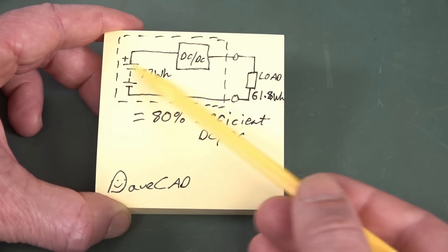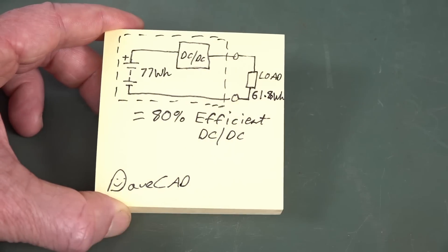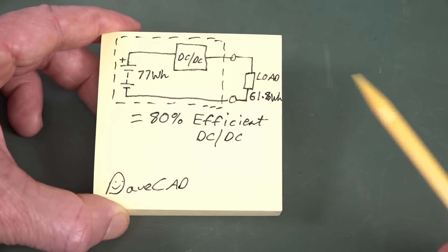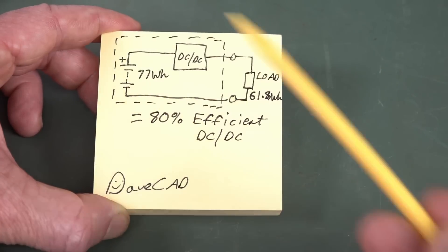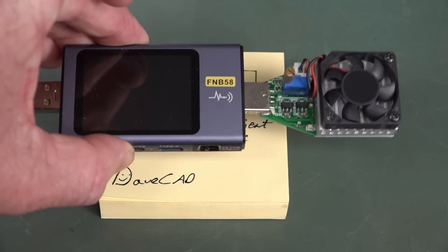So, if you compare batteries with just the input-referred figures, then it doesn't include the efficiency of the DC-to-DC converter. So, one of them might be way more efficient than another product, but you wouldn't know unless you actually test it output-referred like we did with this load here.